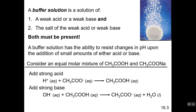That's basically how a buffer works: it mops up any added acid or base and converts them into weaker acids and bases, reducing the change in pH. The pH will change, but only by a very small amount. In a non-buffer solution, adding a strong acid would drop the pH by several units, and adding a strong base would increase it by several units.